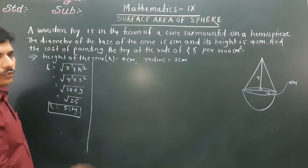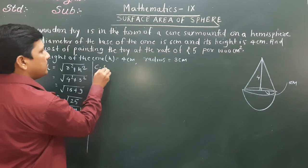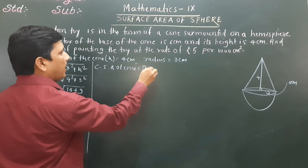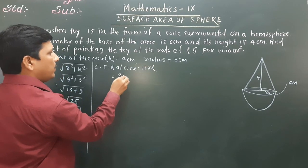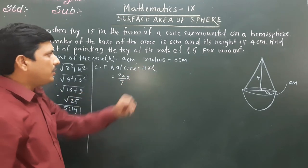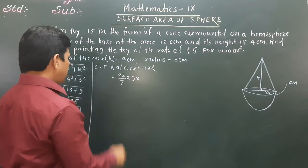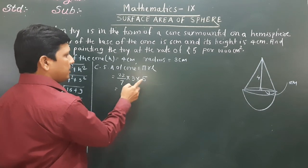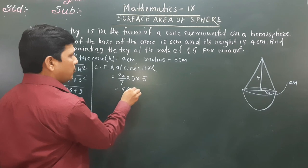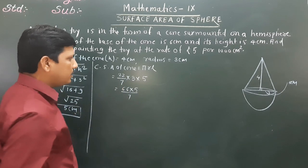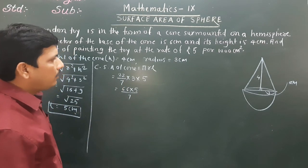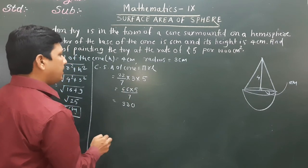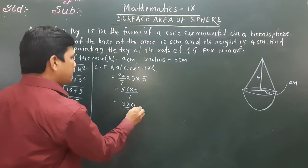Now we find the curved surface area of the cone. CSA of cone = πrl = 22/7 × 3 × 5. That gives 66 × 5 divided by 7 = 330/7 cm².